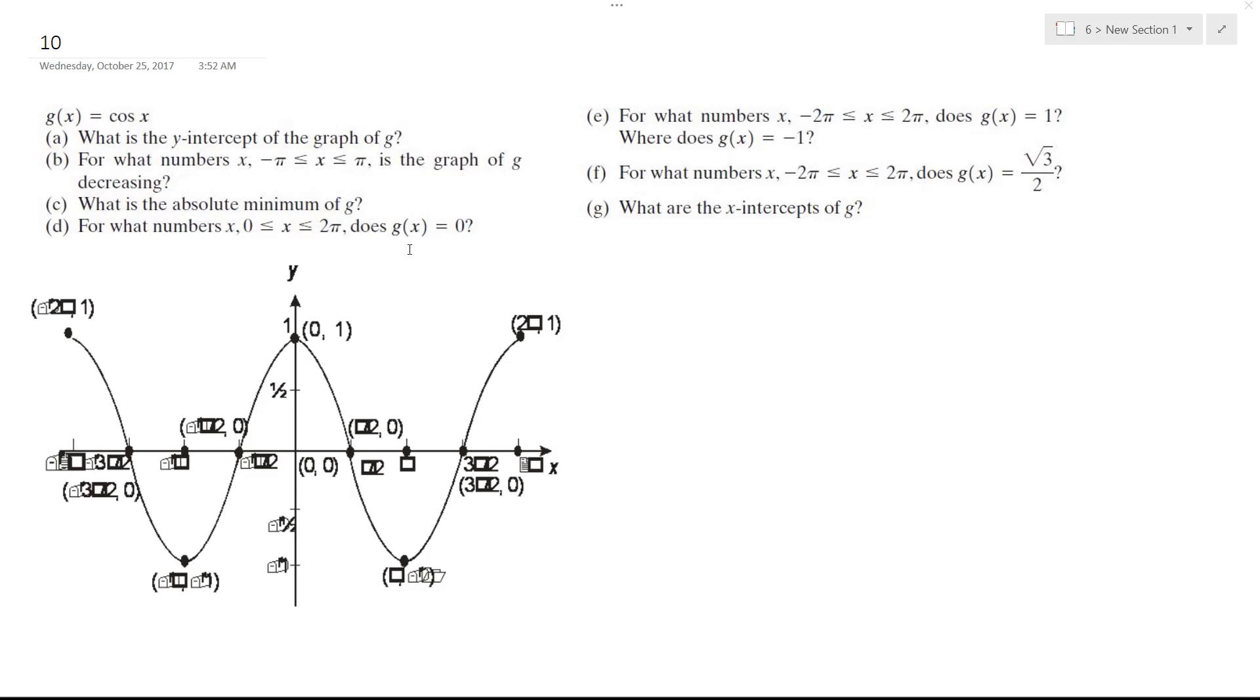We have the graph g(x) = cos(x). What is the y-intercept of the graph of g? In this case it's at (0, 1). That's the y-intercept there, or y equals one.